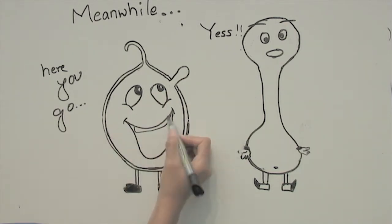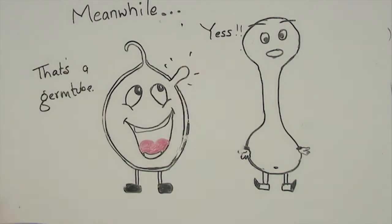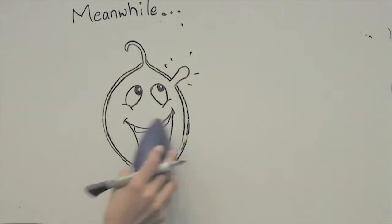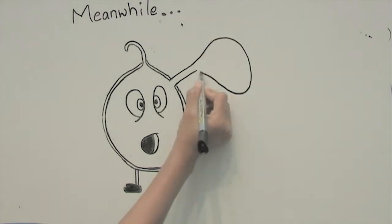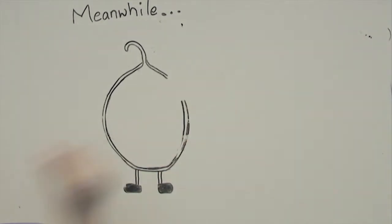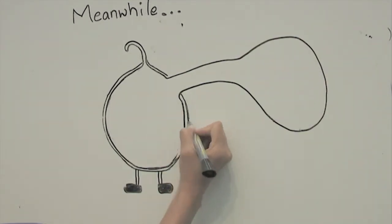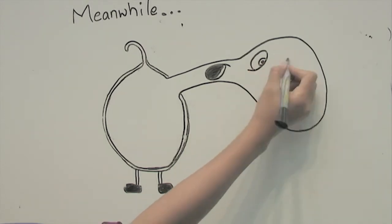The conidia starts germinating. That's the germ tube that's popping out on the side of the conidia. And it later develops into appresoria. And all the cell content of conidia, that's the lipid-like structure, moves to appresoria.